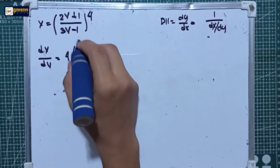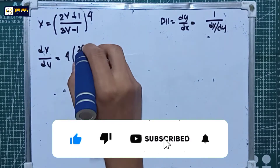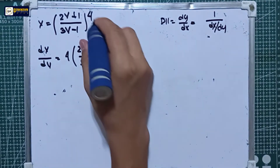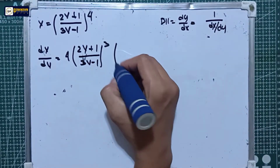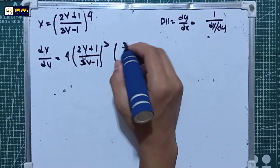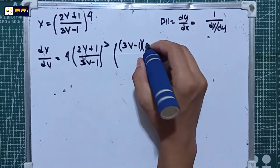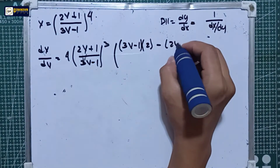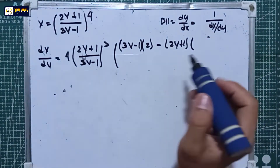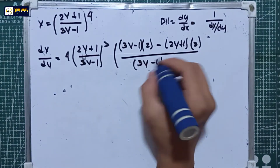Applying the power rule first: dx/dy equals 4 times (2y + 1) over (3y − 1) raised to the 3rd power, multiplied by the derivative of (2y + 1) over (3y − 1). Using the quotient rule, that is (3y − 1) times the derivative of (2y + 1) which is 2, minus (2y + 1) times the derivative of (3y − 1) which is 3, all over (3y − 1) squared.